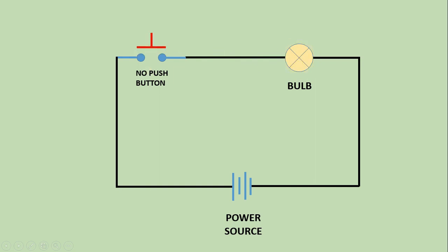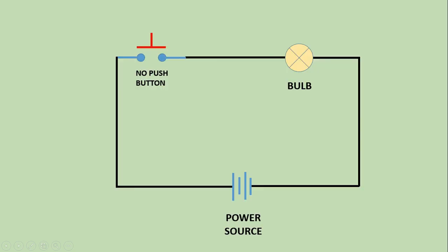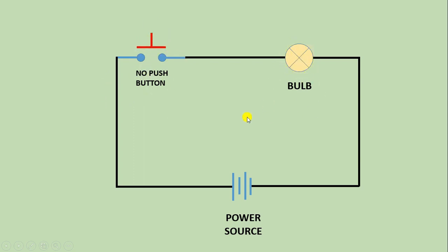There is a spring inside the push button. If you press the push button and then release it, it will go back to its normal position. So when we use a push button: pressing turns the lamp on, and releasing turns it off. If you want to provide power supply to any bulb or circuit only when you are pressing the push button, then you have to use a NO push button there.